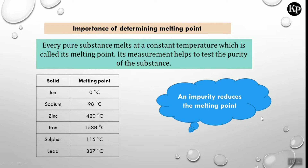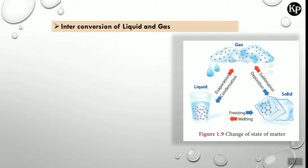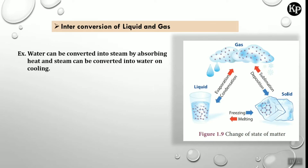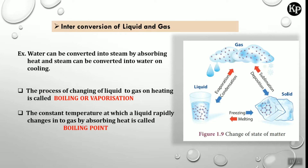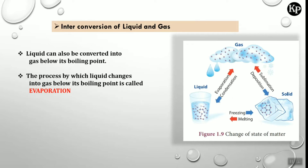The second inter-conversion is liquid and gas. For example, water can be converted into steam by absorbing heat, and steam can be converted into water on cooling. The process of changing liquid to gas on heating is called boiling or vaporization. The constant temperature at which liquid rapidly changes to gas by absorbing heat is called the boiling point.